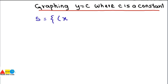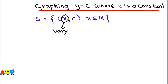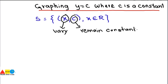The ordered pair will be like (x, c), where x belongs to real numbers. One thing you have to know: the value of x will vary, but the value of y will remain constant, that is equal to c. So how can you draw the graph of an equation like this, where x is varying and y is constant?